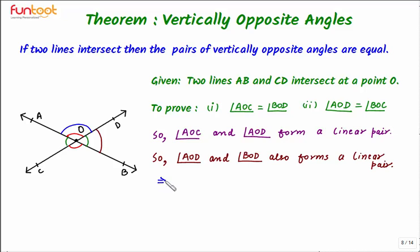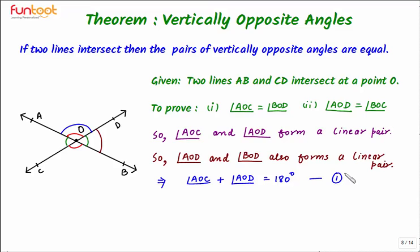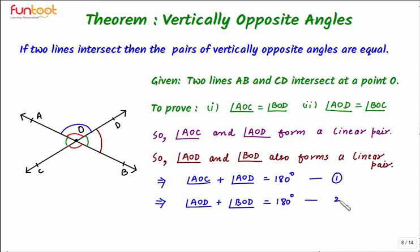Since angle AOC and angle AOD form a linear pair, their sum will be 180 degrees. So we can say: angle AOC + angle AOD = 180 degrees. Call this equation 1. Also, since angle AOD and angle BOD form a linear pair, their sum will also be 180 degrees. So: angle AOD + angle BOD = 180 degrees. Call this equation 2.